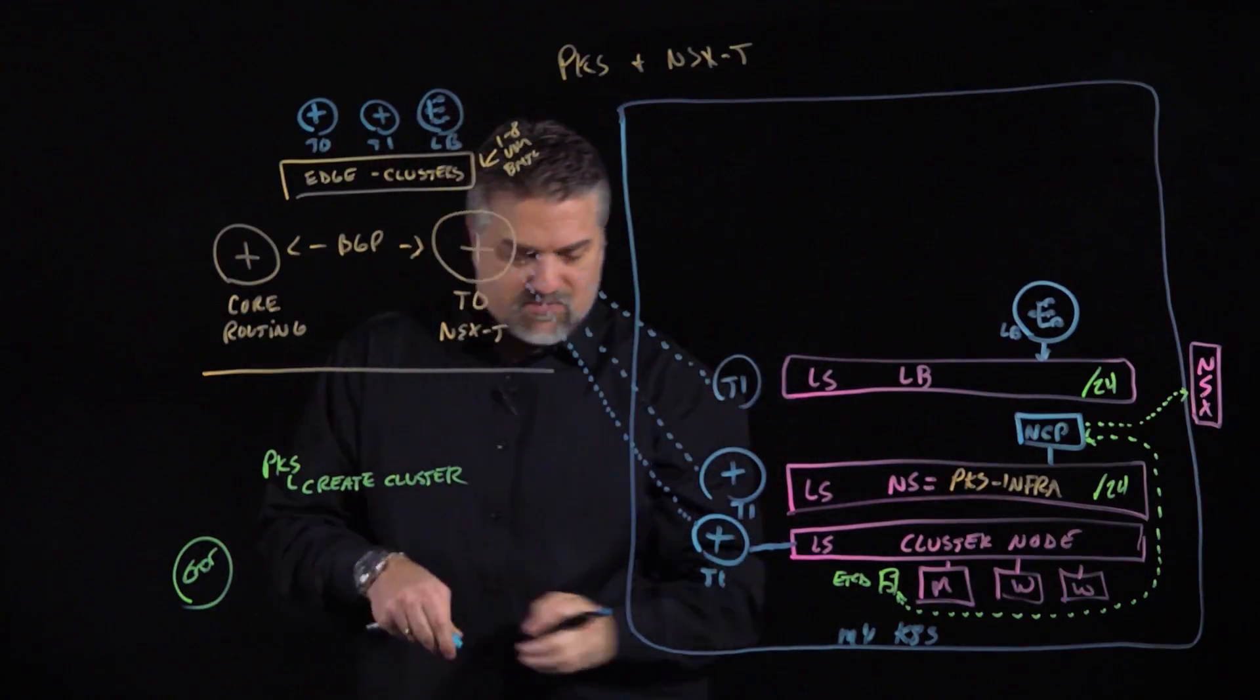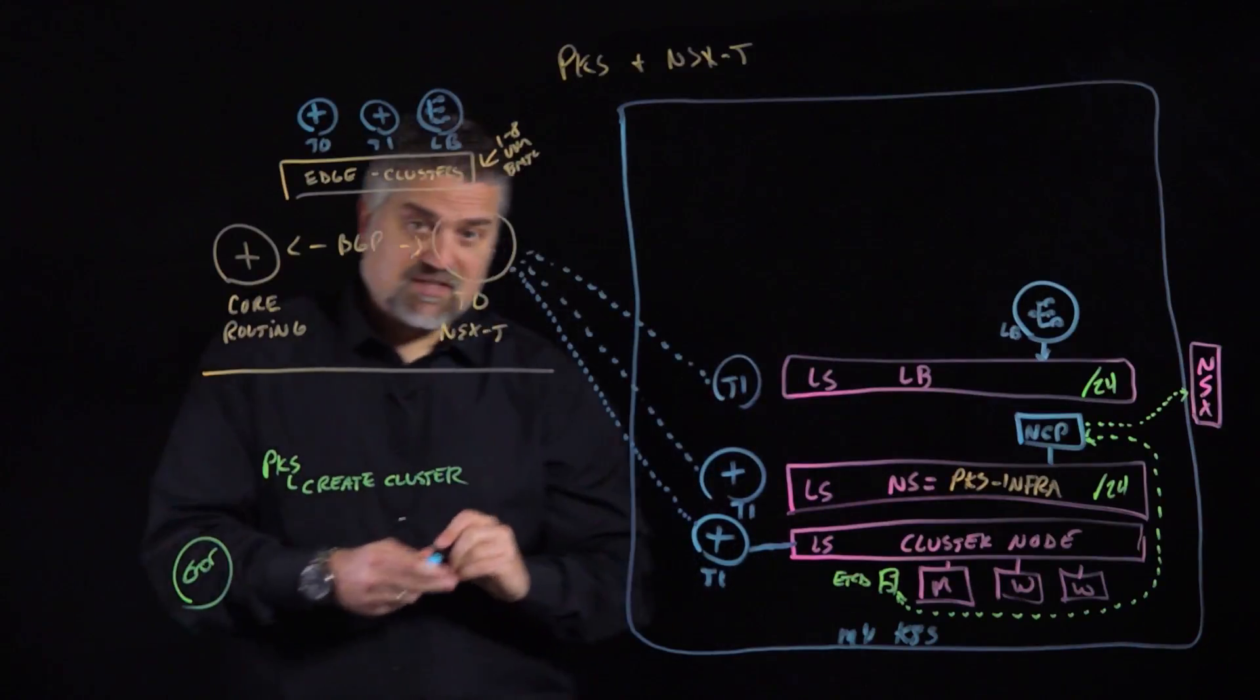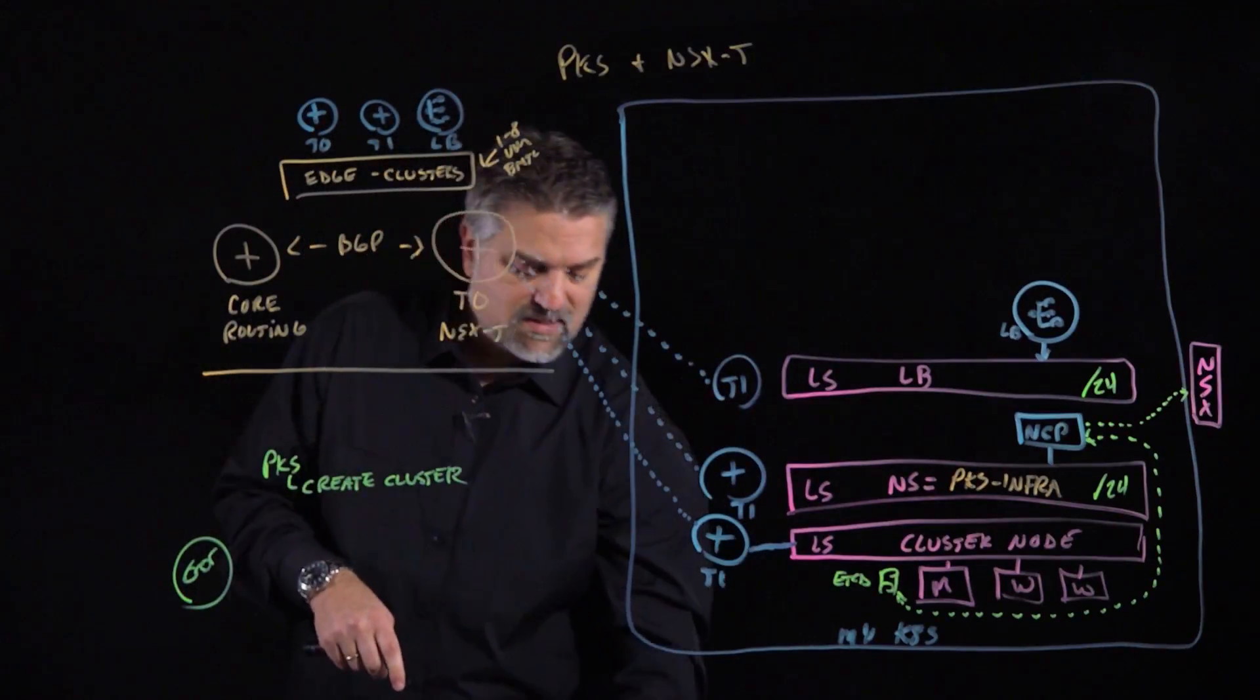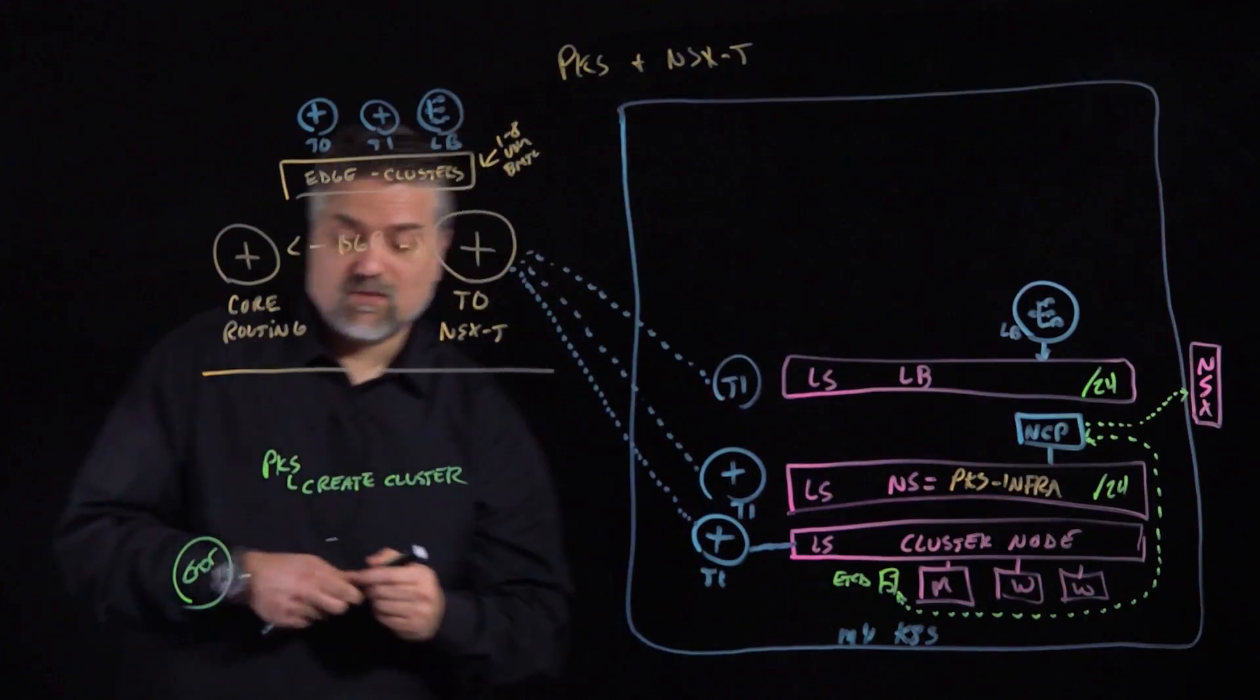These T1 routers are also linked to our T0 so that we can route amongst the logical switches in our cluster, route to other T1s and other logical switches in other clusters if we so deem that we want to allow it, and also route ingress and egress to the rest of our infrastructure. So these are some of the things that happen whenever we create a cluster and some of the interaction with NSX-T.